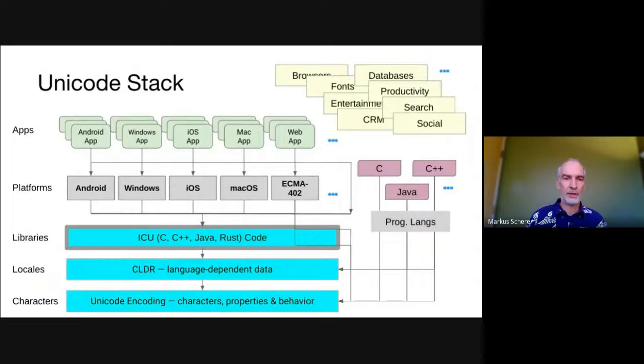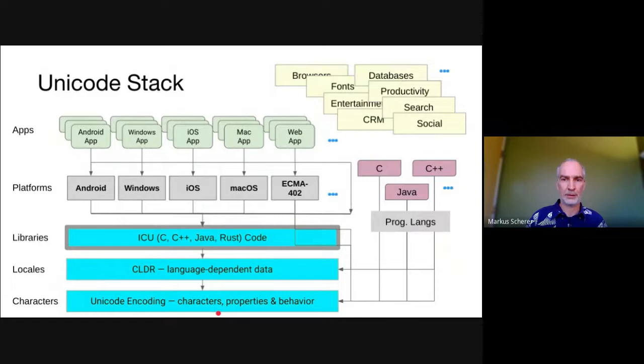ICU is one of the three main products in the Unicode stack. The Unicode encoding supports thousands of languages and is the foundation for all text display, input and interchange. It comes with data and algorithms for how characters behave and how to use them. The CLDR project supplies language-dependent data for software internationalization and additional algorithms. And ICU provides the code that implements internationalization functionality based on CLDR and on the Unicode encoding.